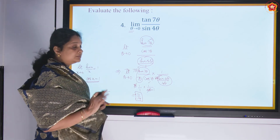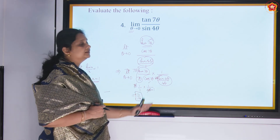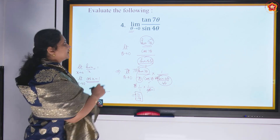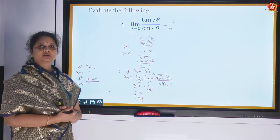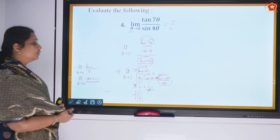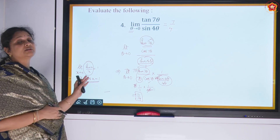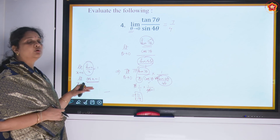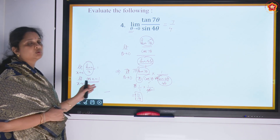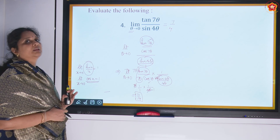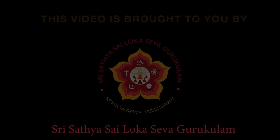If you apply limits directly, 7 times 0 and 4 times 0 give 0/0 form, so you need to introduce theta and cancel it before applying the limit to get a valid answer. The answer is 7 by 4. I hope you understood the questions we did today. This formula — limit x tending to 0 of sin x by x equals 1 — is one of the most important in limits. Please practice more, revisit previous videos and slides if in doubt, and watch the video multiple times so the concepts get registered. Thank you, bye-bye.